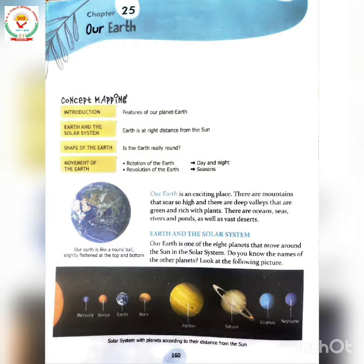Hello students, today we are going to start our next chapter — Chapter Number 25, 'Our Earth.' In this chapter we will study: features of our planet Earth, is Earth really round, rotation of the Earth, and revolution of the Earth. Our Earth is an exciting place. There are mountains that soar so high, and there are deep valleys that are green and rich with plants, and there are oceans, seas, rivers, and ponds, as well as vast deserts.